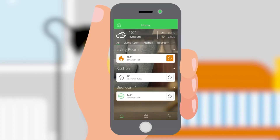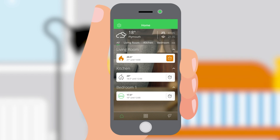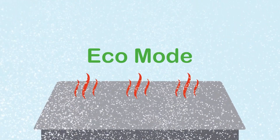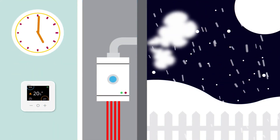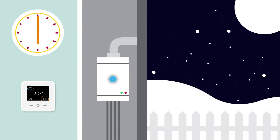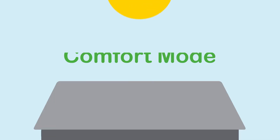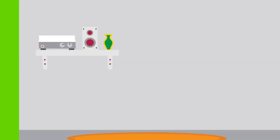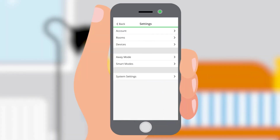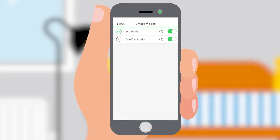More advanced features can be accessed by returning to the home screen and tapping settings. Activate eco mode for energy saving — using optimum stop and weather compensation, eco mode learns how well a property retains heat and works out if the heating can be turned off sooner to save energy while still maintaining the desired temperature. Comfort mode is Wiser's version of optimum start; it learns how long a home takes to heat up and ensures the set temperature is reached by the on time. To activate any of these features, simply tap the toggle to enable them.